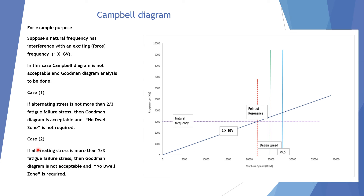Case 2: if the alternating stress is more than 2/3 of the fatigue failure stress, then the Goodman diagram is not acceptable and in this case the no-dual zone is required. So based on the condition, we go for the no-dual zone or not — depending on Case 1 or Case 2.